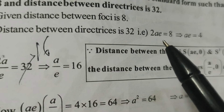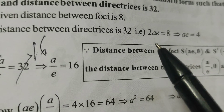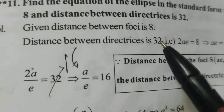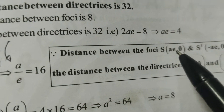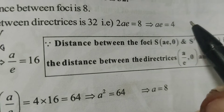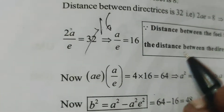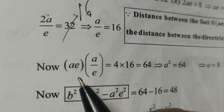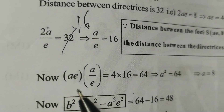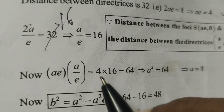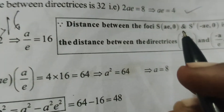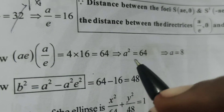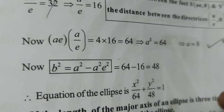Distance between foci: 2AE equals 8, so AE equals 4. Now, multiplying AE into A/E: 4 times 16 equals 64, so A² equals 64, and A equals 8.